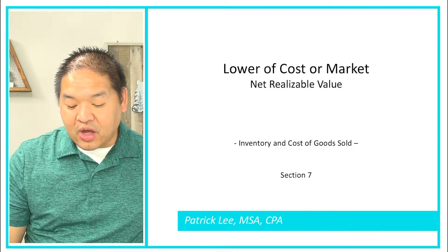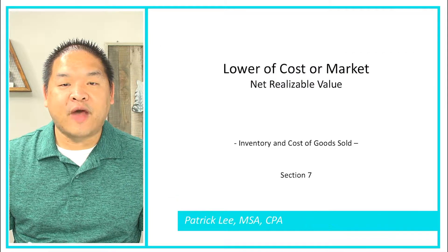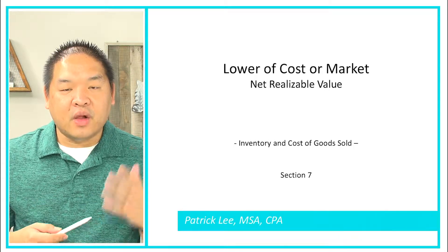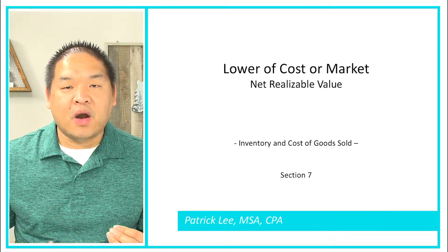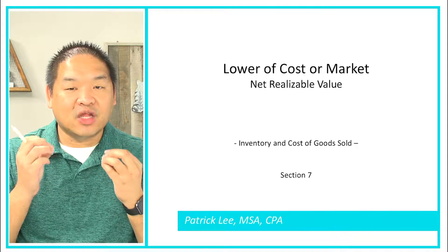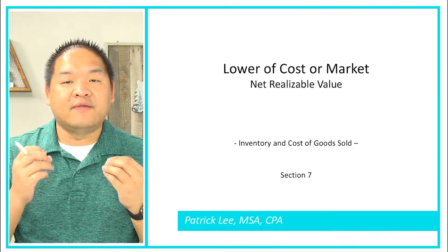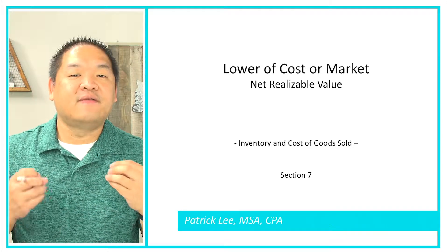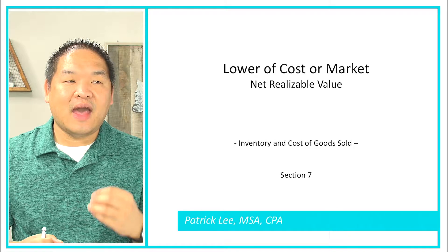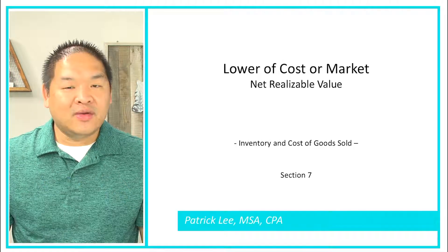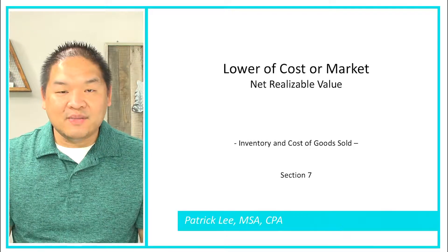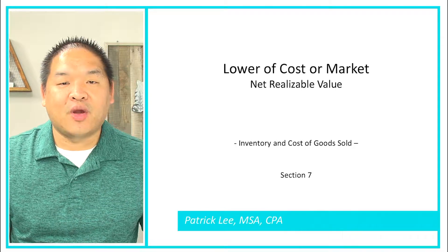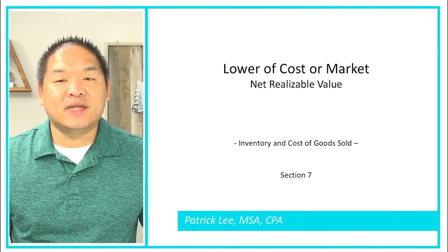To summarize the lower of cost or market: line up all the costs and all the market values, take the lower of the two. If the lower value happens to be market, you have a loss on that product. If the lower value happens to be cost, you don't need to do anything because we're not changing the valuation. That's the lower of cost or market.